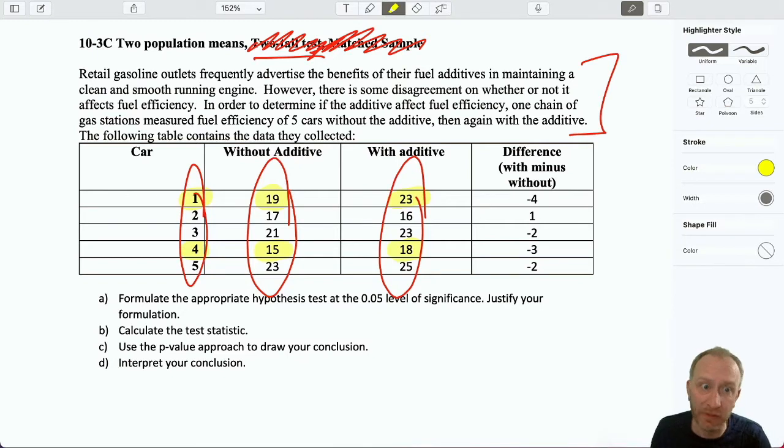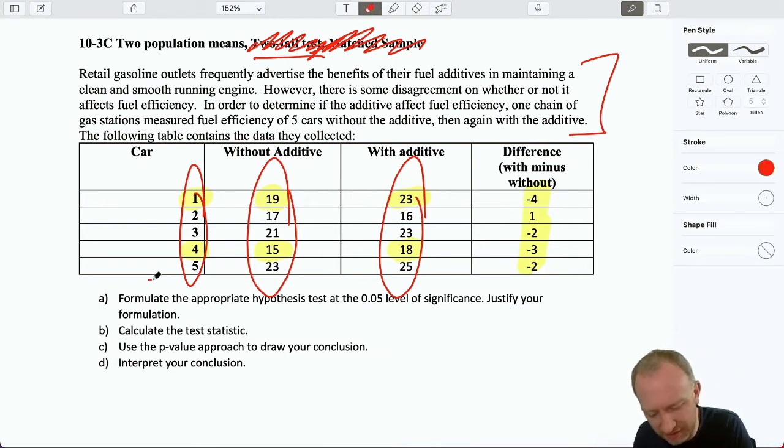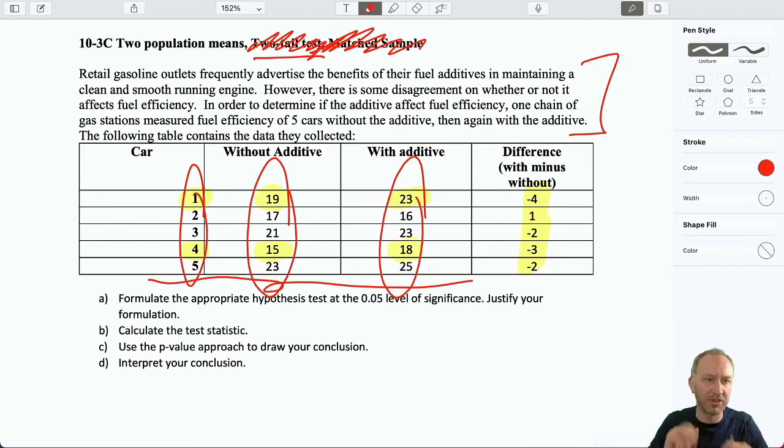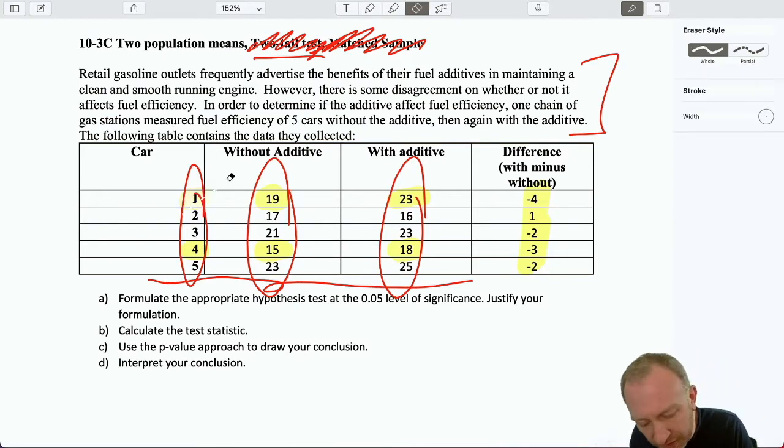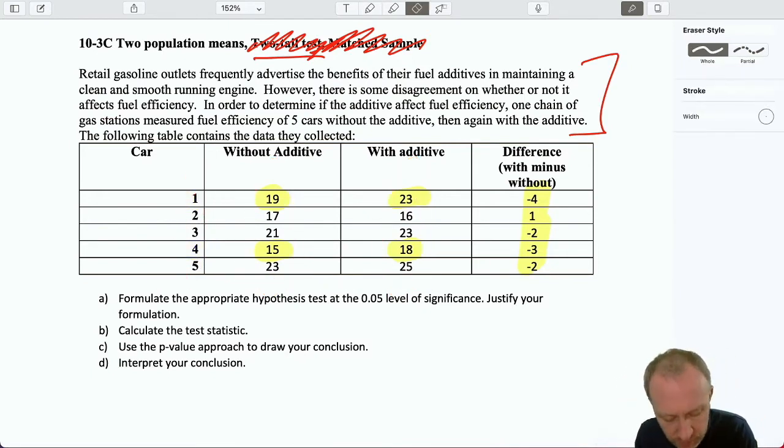Also a dead giveaway is that these difference values have been given to us. That's also a pretty strong clue. You're lucky if on an exam or something, you're lucky if you've got that much detail given to you. Normally, I don't think you would have those differences. Your sample might only be those first three columns. So looking at that table, we've definitely got some clues as to what kind of problem we're working with.